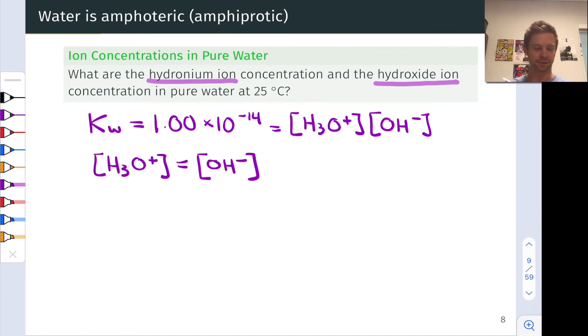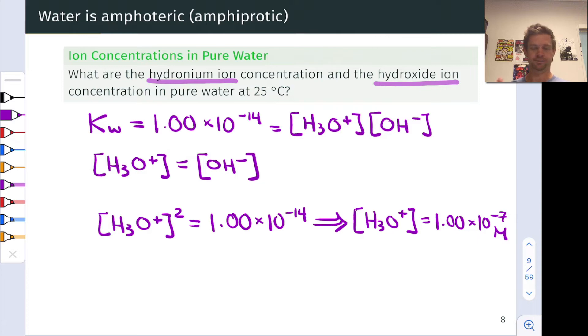Putting these two things together, if I substitute in H3O+ concentration where OH- concentration appears above, I get that the H3O+ molarity squared is equal to 1 times 10 to the negative 14th. Doing some basic math, taking the square root of both sides, gets us to the hydronium concentration is equal to 1 times 10 to the negative 7 moles per liter.